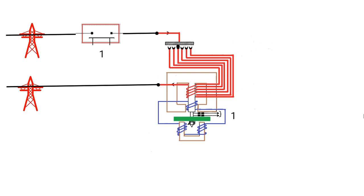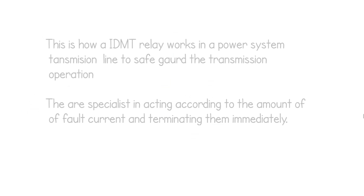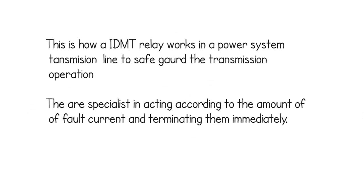This is how an IDMT relay works in a power system transmission line to safeguard the transmission operation. They are specialists in acting according to the amount of fault current and terminating them immediately. As the fault current increases, the time taken to terminate this fault will be decreased.